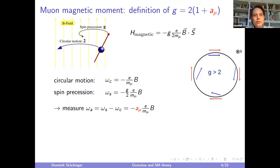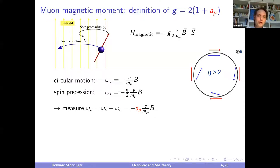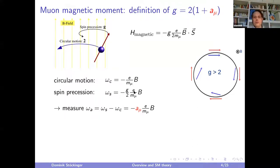Experimentally, you place a charged particle in a homogeneous magnetic field. It performs circular motion with cyclotron frequency e/m × B, while the magnetic moment precesses with frequency (g/2)(e/m)B. The difference between these two frequencies is directly proportional to g-2, so by measuring this frequency difference and the magnetic field precisely, you have direct access to a_μ — and that is what the experiment does.